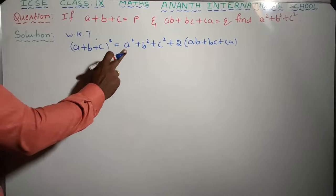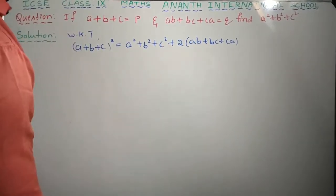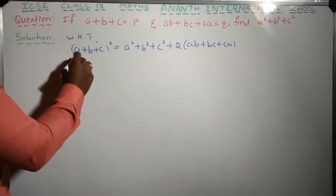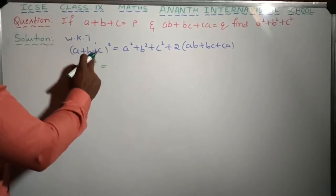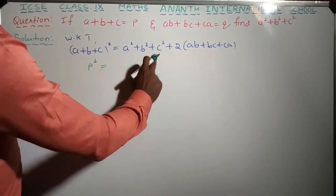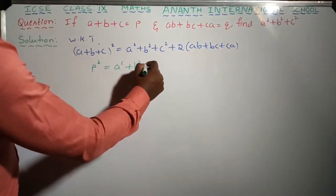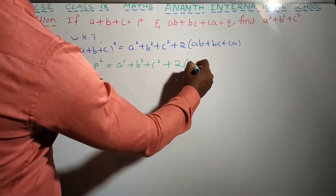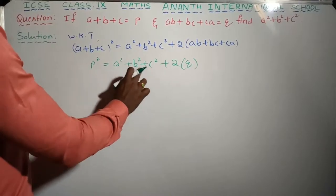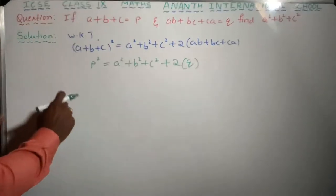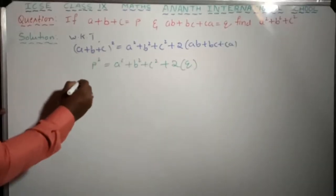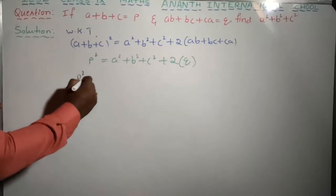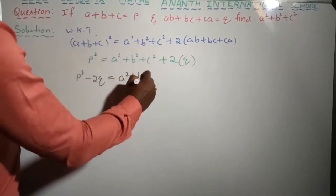Now, the sum of a, b, c is equal to p, so I substitute p in place of a plus b plus c: p squared equals a squared plus b squared plus c squared plus 2 into ab plus bc plus ca, and ab plus bc plus ca equals q, so I write 2q in a bracket. I want the sum of their squares, so I transfer 2q to the left side: p squared minus 2q equals a squared plus b squared plus c squared.